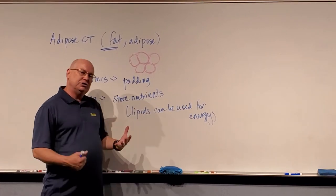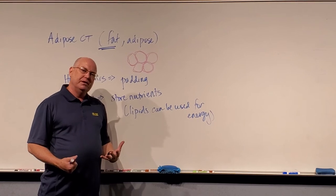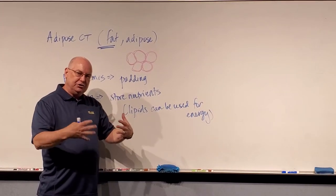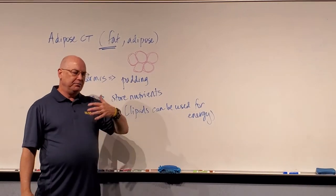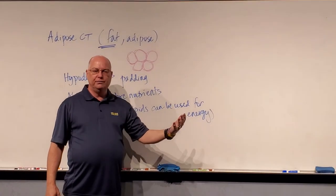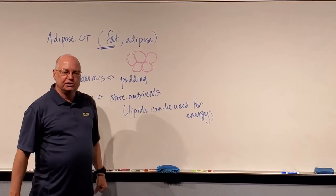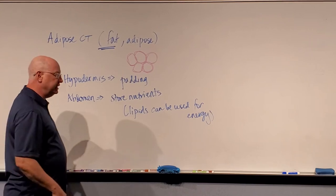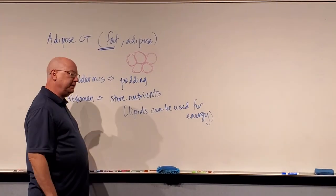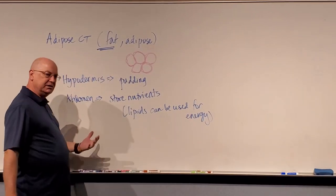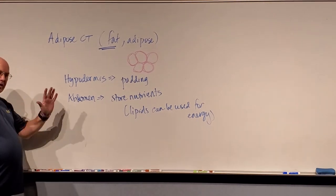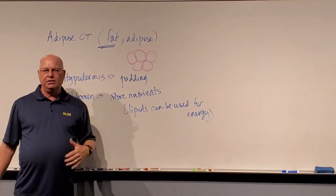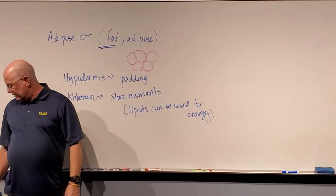So fat provides padding and it can store lipids or nutrients for energy. Another thing that fat can do is it provides insulation. So the more adipose tissue you have on your body, the more heat you can store, the warmer you are, and you might be able to withstand a colder environment than somebody who's real skinny and thin and doesn't have a lot of padding and lipid storage. They can't store as much heat. So adipose tissue can trap heat as well and act as an insulator.